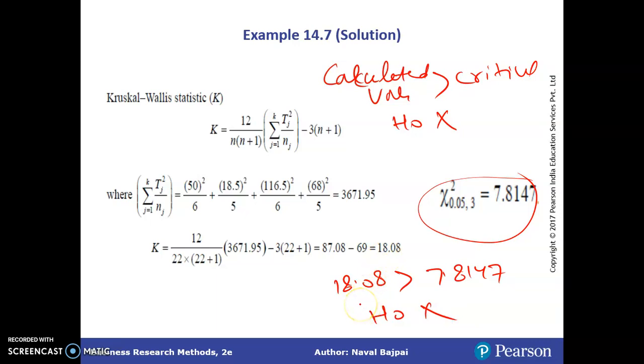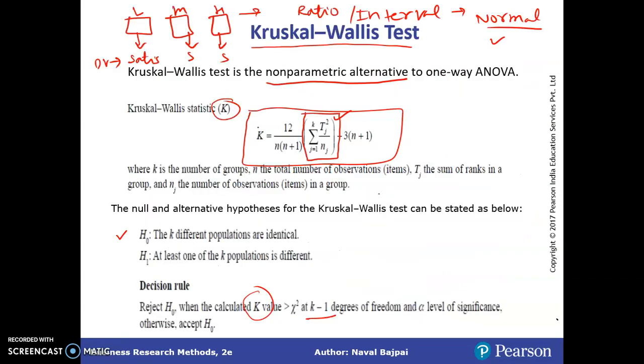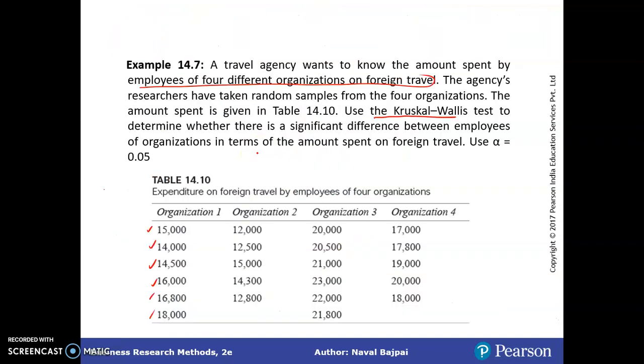So now, what we mean by this rejection of H naught? Let us quickly take you to the H1. So we cannot accept the H naught, we are rejecting it. What we go with? We go with H1. At least one of the k population is different. So among these four organizations, at least one is different from other based on their amount spent on the foreign travel.